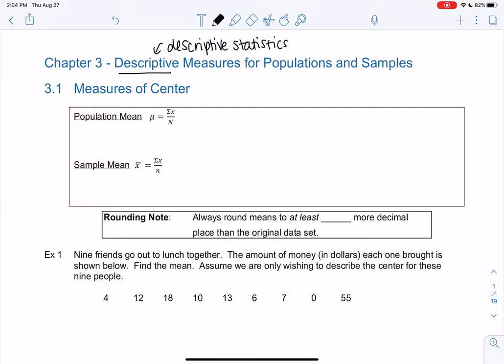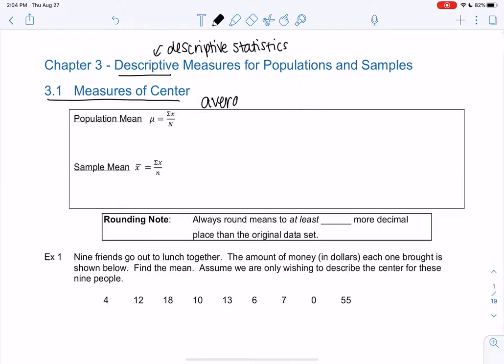We're going to start with measures of center. This could be the middle of a graph, things like that. One way to measure center is the average or the mean. We're going to use slightly different symbols if we have a population versus a sample. It will help us keep track of what we have, and that way when we're doing inferential statistics later, we can keep track of the difference.